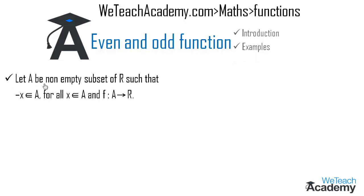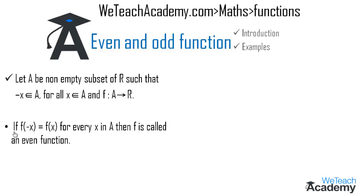Let A be a non-empty subset of R such that minus x belongs to A for all x belonging to A, and let f be a function from A to R. If f(−x) = f(x) for every x in A, then f is called an even function.